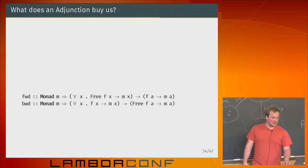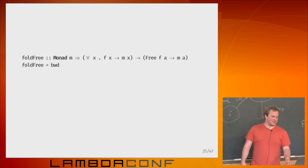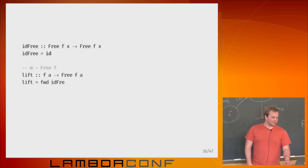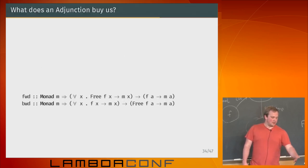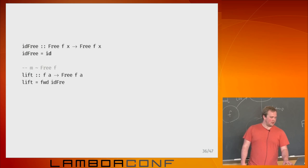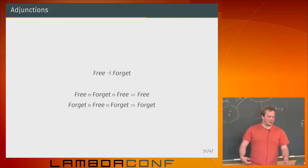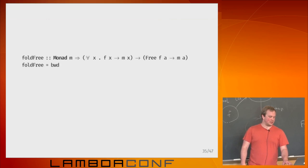Expanding out the type synonym, if we compare with fold free — the function we use to build interpreters — we notice they're the same thing: fold free says if you know how to interpret any functor layer into a monad, you can extend that to the entire free structure. That's exactly the backward conversion of natural transformations. On the other side, specializing the forward conversion with the identity gives us the lift function — taking any functor and injecting it directly into `Free f`. The adjunction gives us all the structure we need to use free monads.